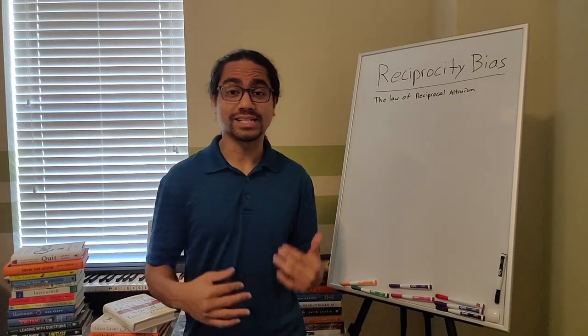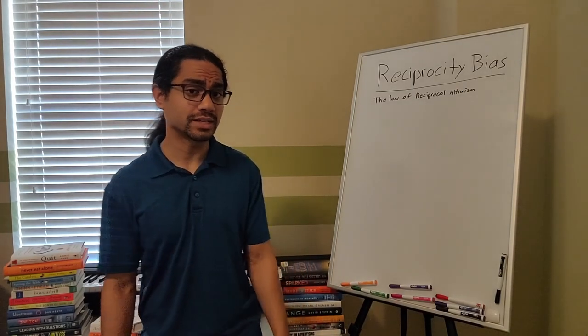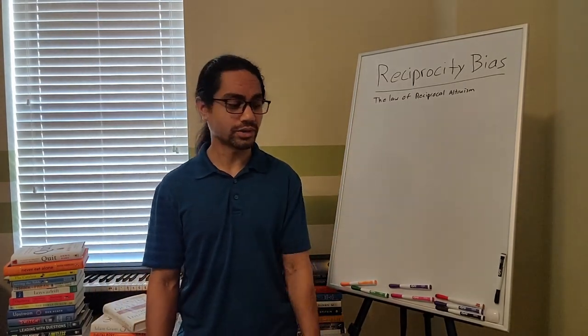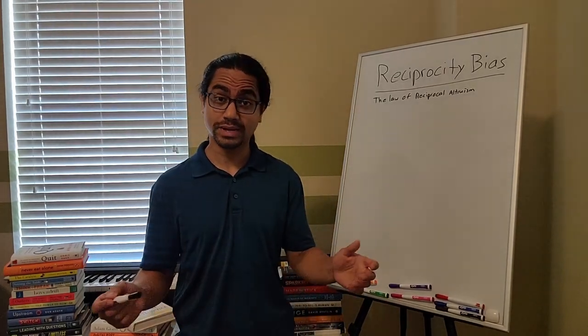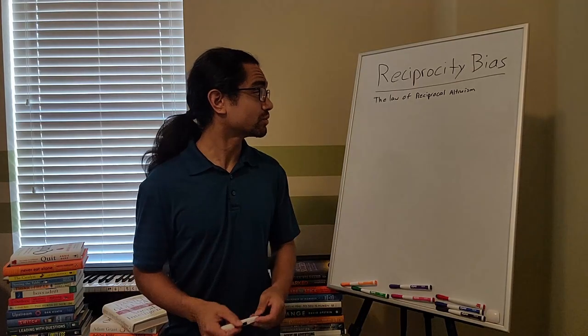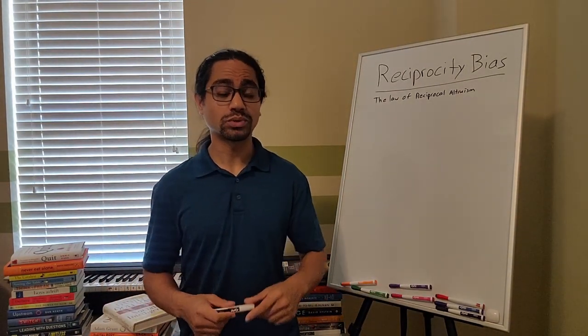Tendencies that we tend to slip into that can make our life harder, although you can use a lot of these to your advantage, and I'll show you how here in a second. So we are talking about the reciprocity bias, as I said today. This is also known as the law of reciprocal altruism.